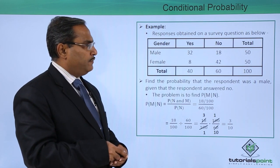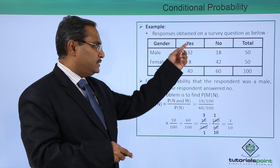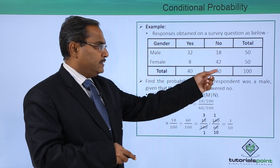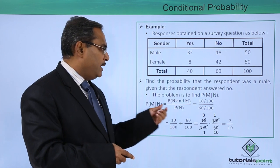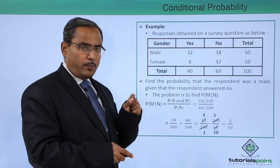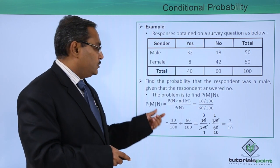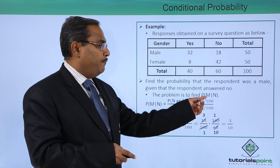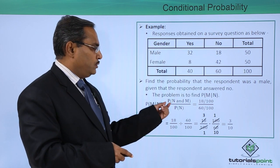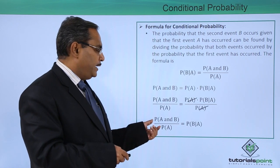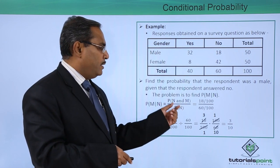Responses obtained on a survey question are as follows: males answered yes or no with a total, and females answered yes or no with a total. The total number of yes responses, total number of no responses, and the overall total of responses is 100. Find the probability that the respondent was a male given that the respondent answered no. We need to find P(male | no), which equals probability of N and M divided by probability of N.